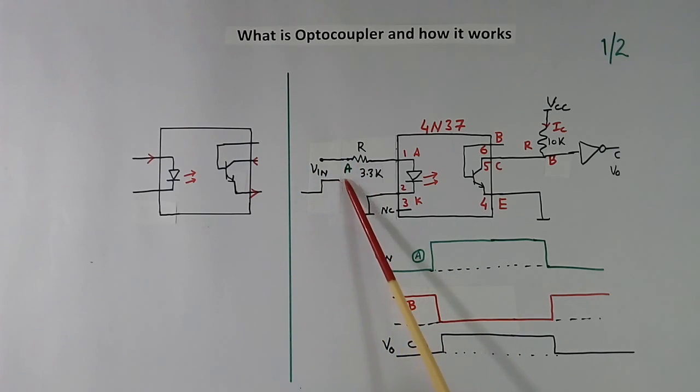When we apply input here, this is input. When input goes high, when this point goes high, current flows like this. Light will come out. This light will fall on this photo transistor and a current will flow like this. This current will come from here. So because of this resistance, voltage at point B will go down. So here it goes high, at this point it goes low.